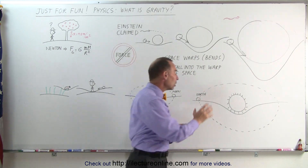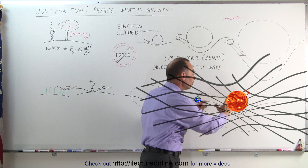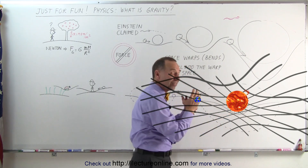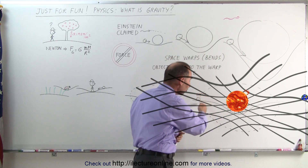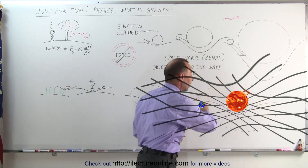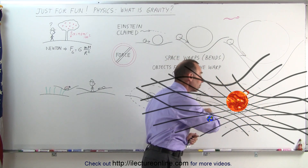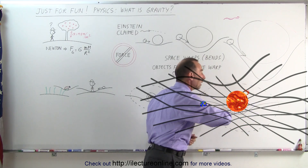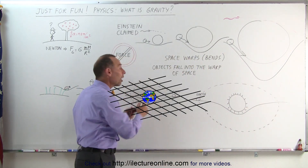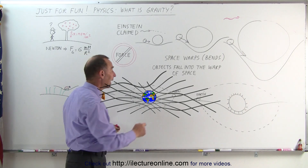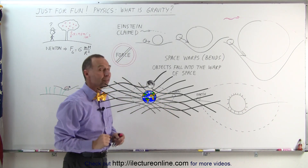This is why the Earth revolves around the Sun. The Sun causes a bend in space. The Earth, if it was standing still, would simply be falling into the bend, but because it has a velocity of about 30 kilometers per second, it stays in orbit — simply like a marble rolling around a hole without falling in. The Earth itself causes a warp in space as well, and the Moon revolves around the Earth because it is affected by that warp in space.